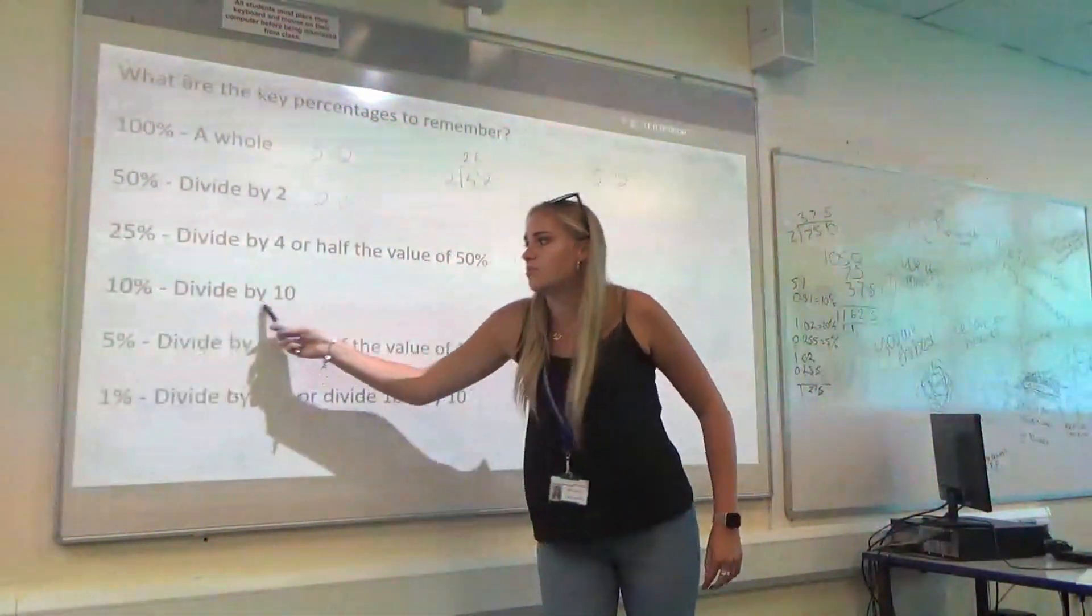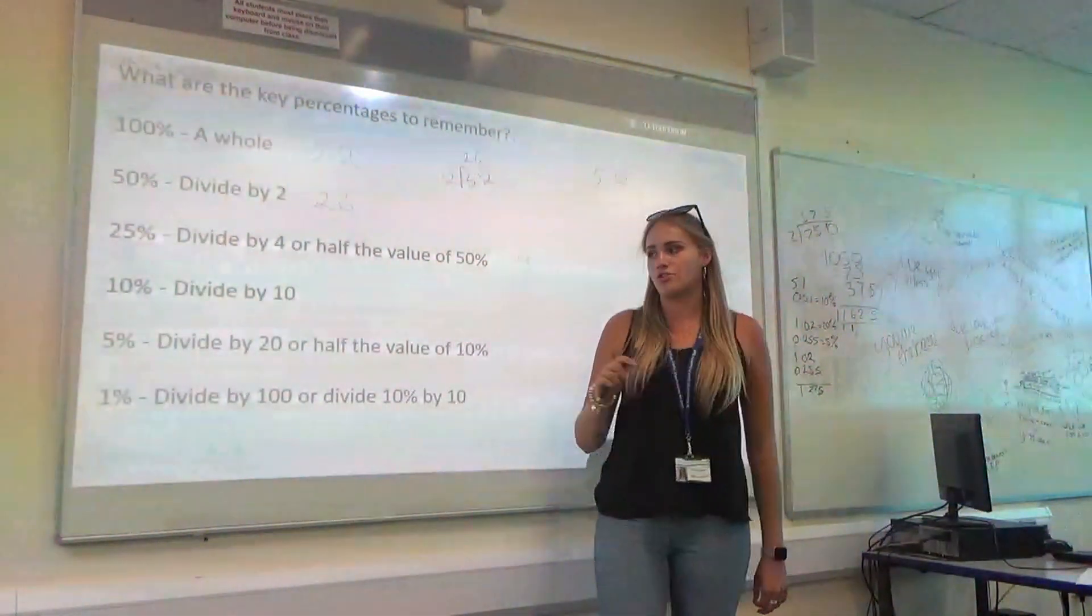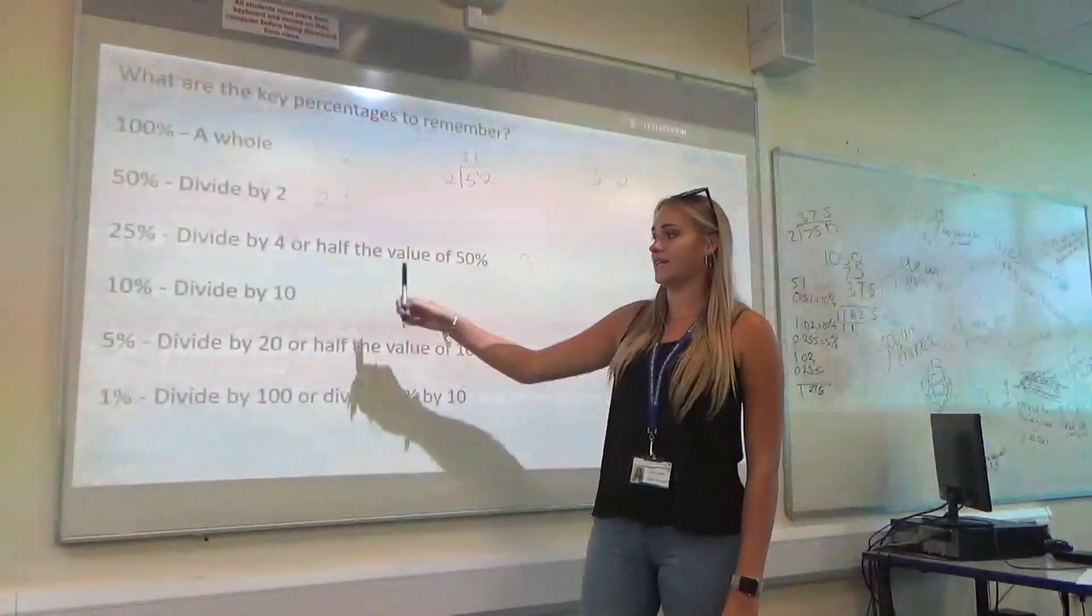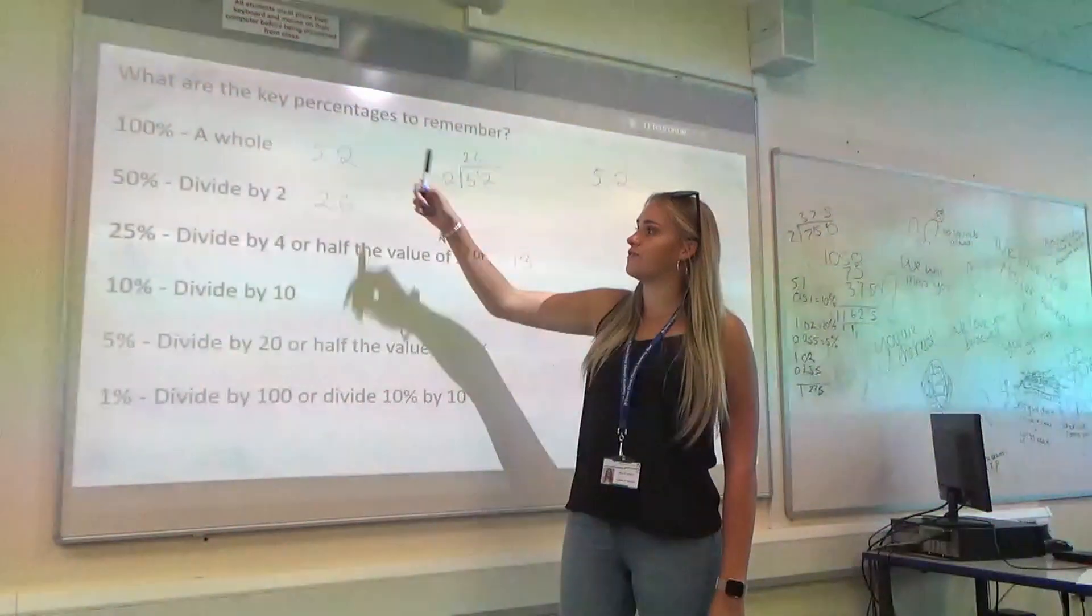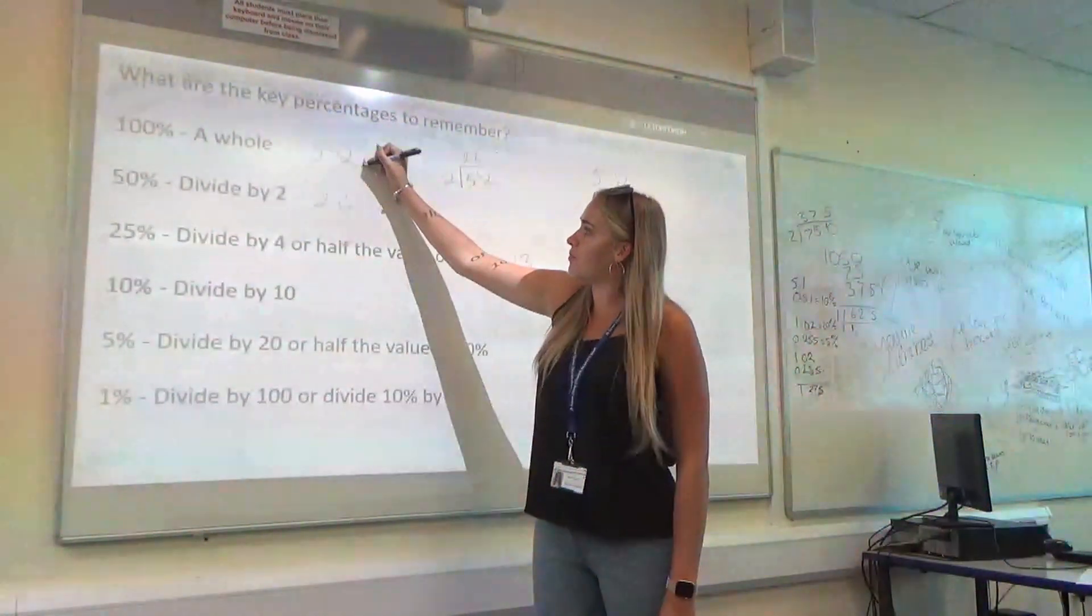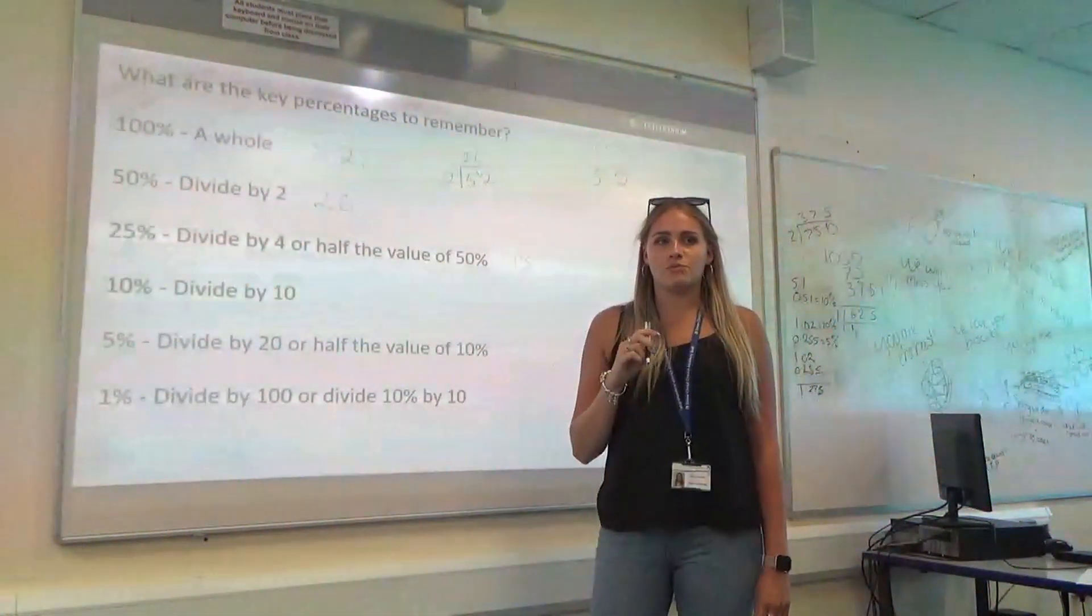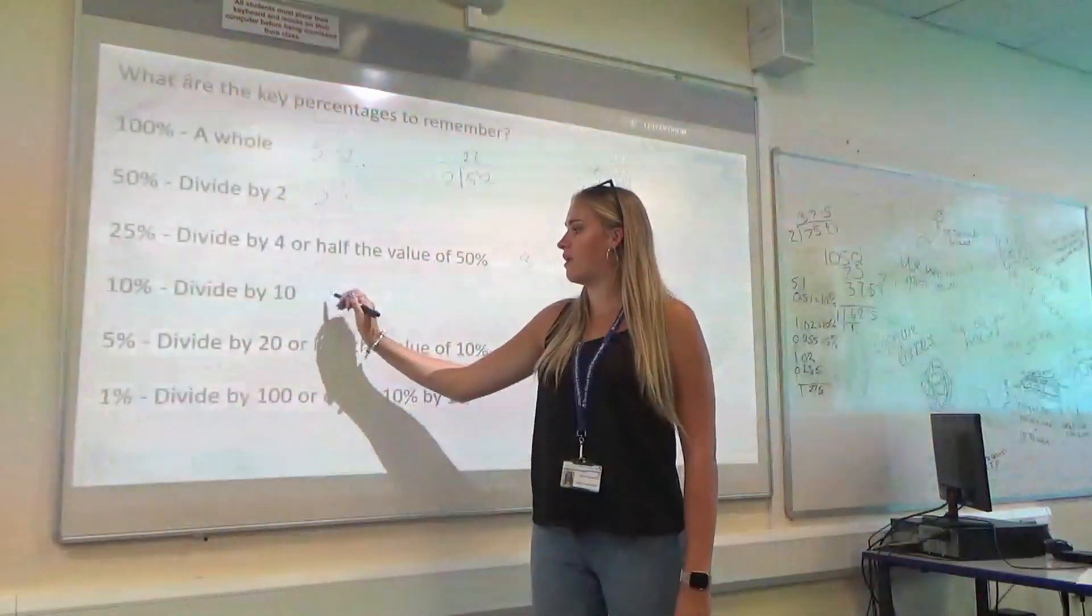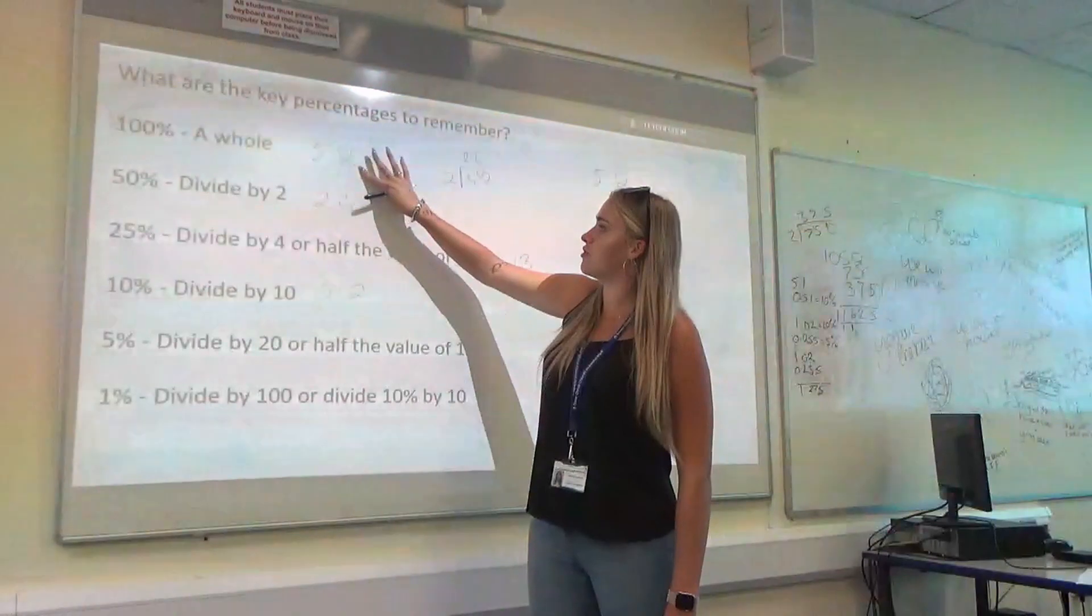Lastly, this one here is the most important percentage. You're always going to use this 10%. To find 10% of any number, you divide by 10. So, 52 divided by 10. You've got to imagine that you've got that decimal at the end. It's going to move in. So, you're going to get 5.2.